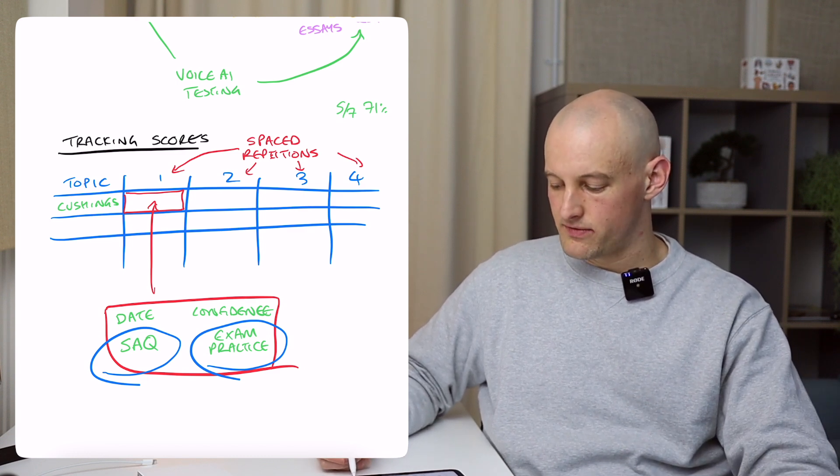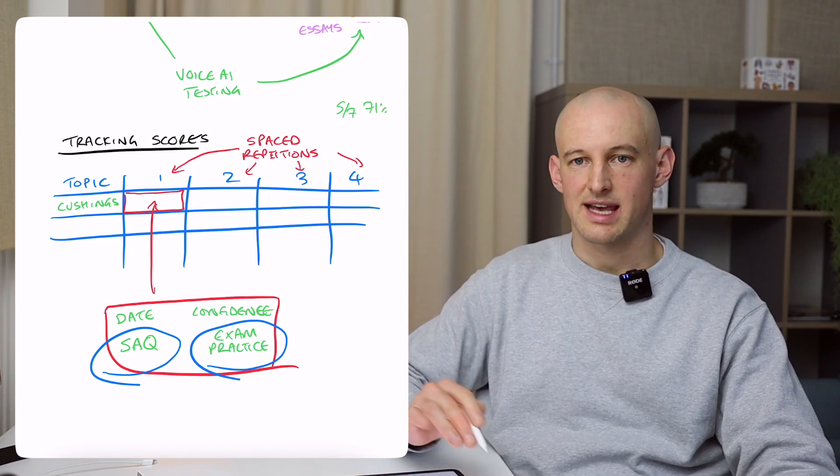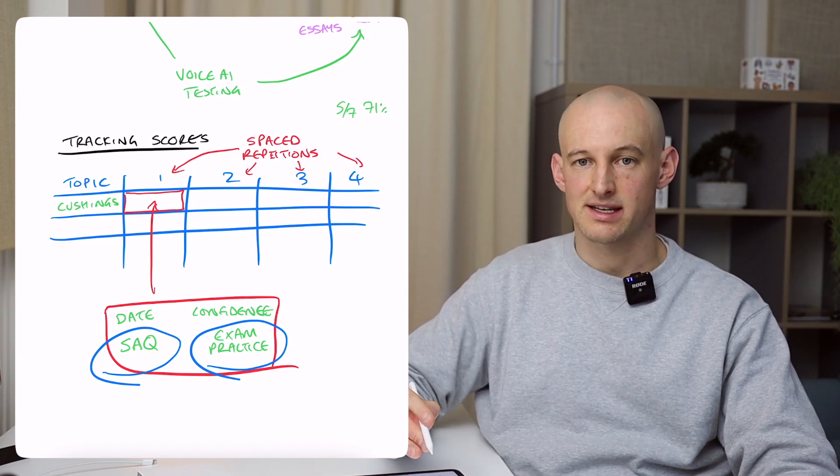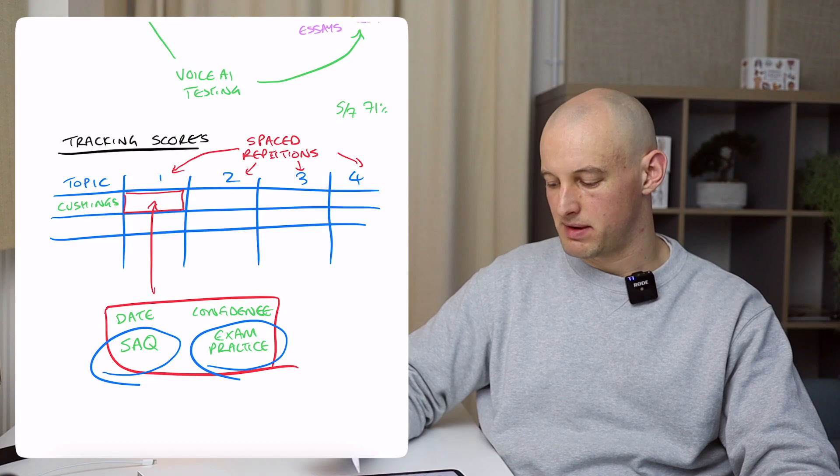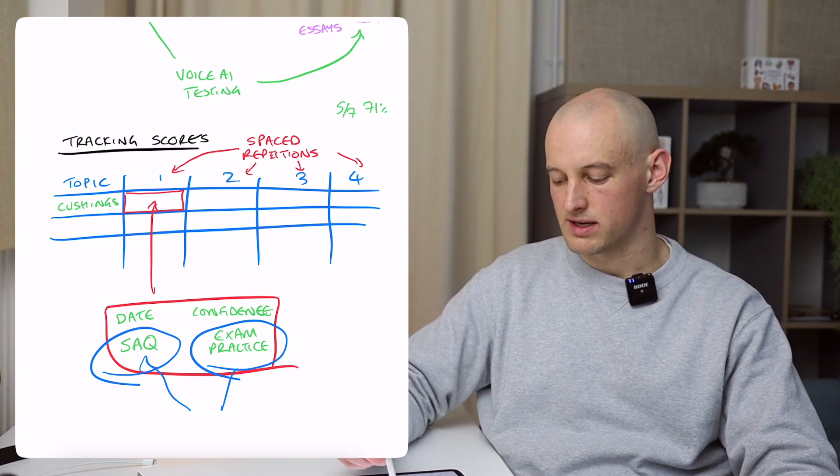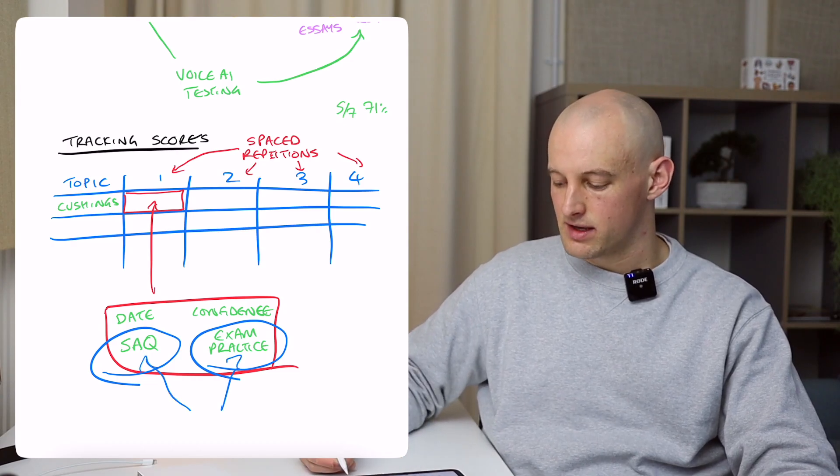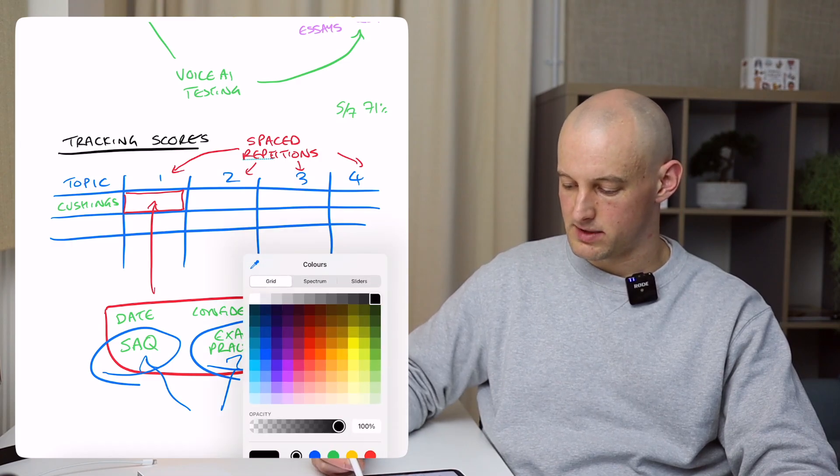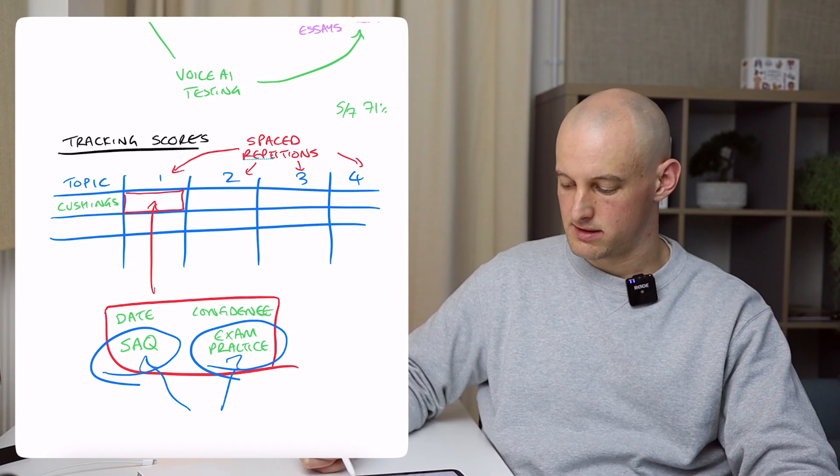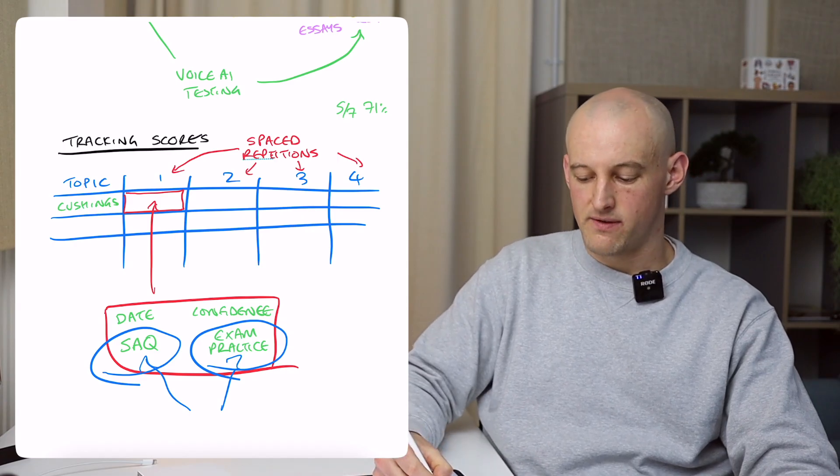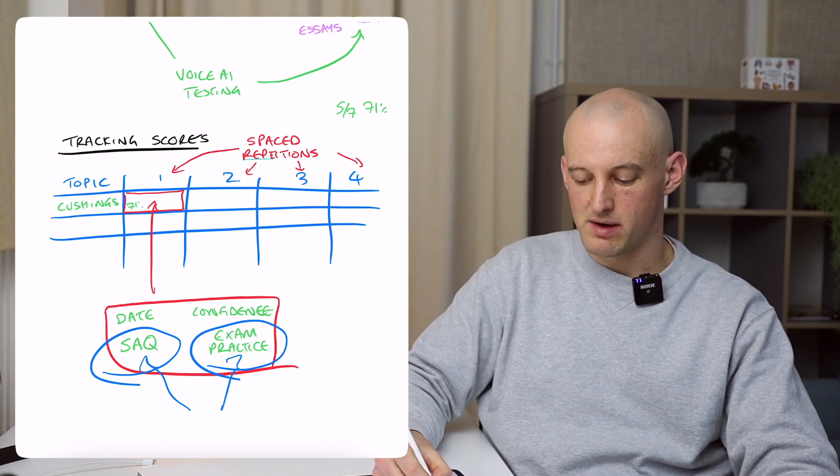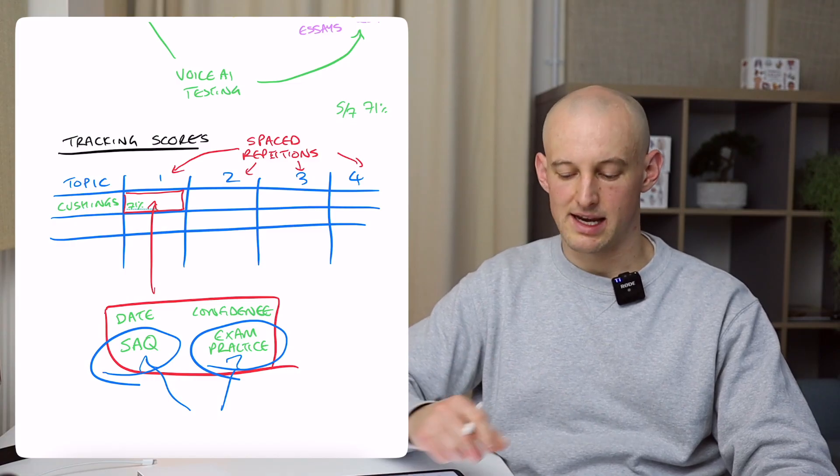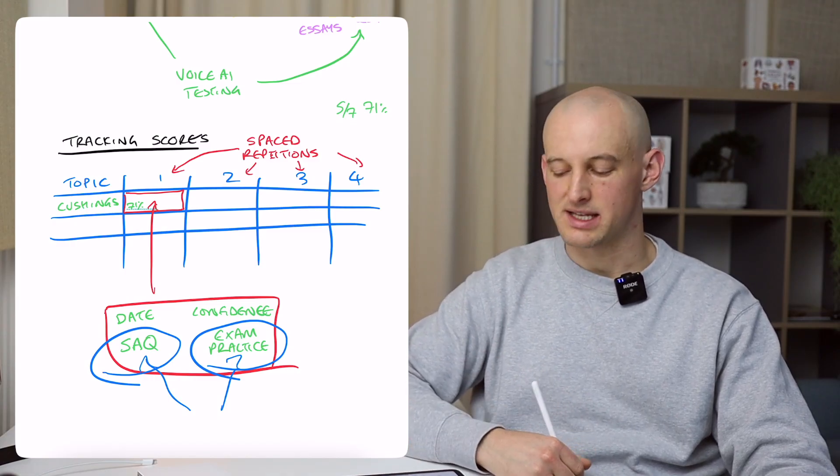And so depending on how you're using this AI voice testing system, depends whether you would record this as a short answer questions or the exam practice. So in this scenario, remember we got, let's add this in here. We got five out of seven. So that was 71%. So I would add that into the box as 71%.